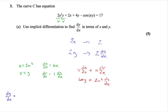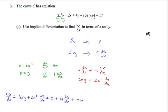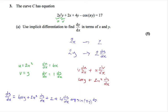So the derivative of the first term is 4xy plus 2x²(dy/dx). The derivative of 2x is 2. The derivative of 4y is 4, but we remember to add dy/dx. The derivative of minus cos gives us plus sine, so the derivative of minus cos(πy) gives us plus sine(πy). We multiply by the derivative of πy, which is π, so it becomes π·sin(πy), and we remember to multiply by dy/dx. The derivative of 17, or any constant, is zero.